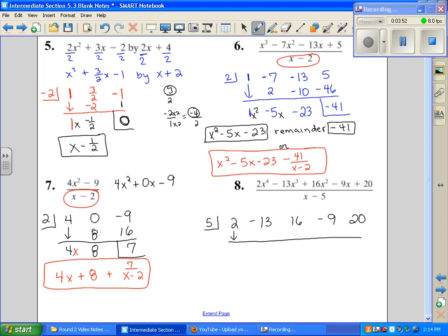We start out by dropping our first. Five times two is ten, add down. Negative thirteen plus ten is negative three. We start over, and we say five times negative three is negative fifteen. Add down, and we get one. Five times one is five. Add down, negative nine and five is negative four. Then we multiply. Five times negative four is negative twenty. Add down for a remainder of zero.